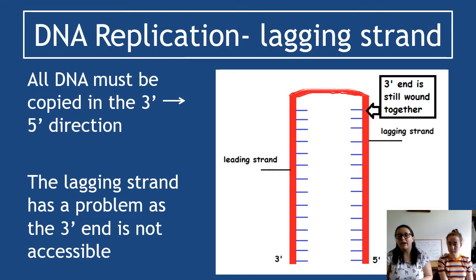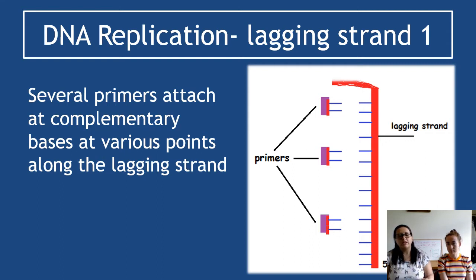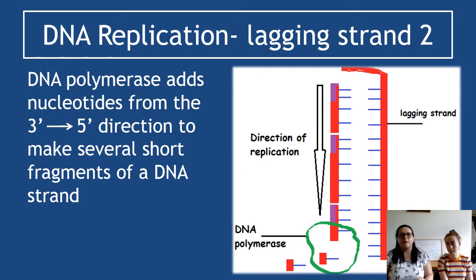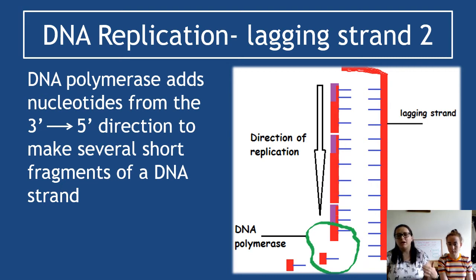Instead, we have to be more creative to access the 3' end. Rather than one primer starting at the beginning, several primers attach as the lagging strand becomes available — as it opens up, one primer buzzes in, then another. DNA polymerase then does its job: starting at each primer, it adds free nucleotides in small chunks, leaping from primer to primer.